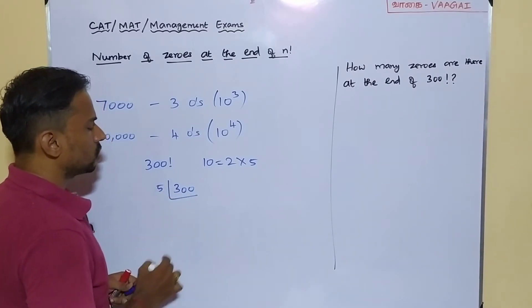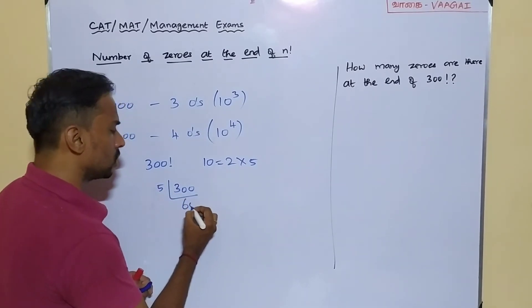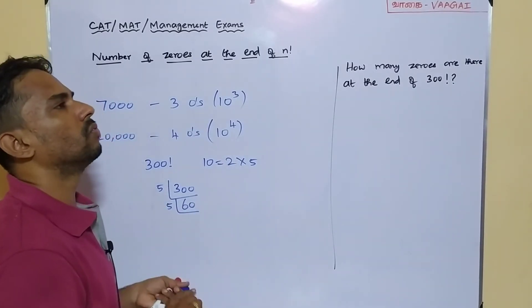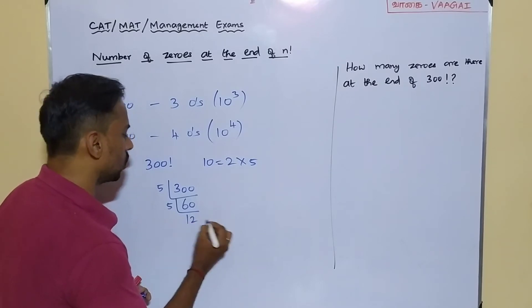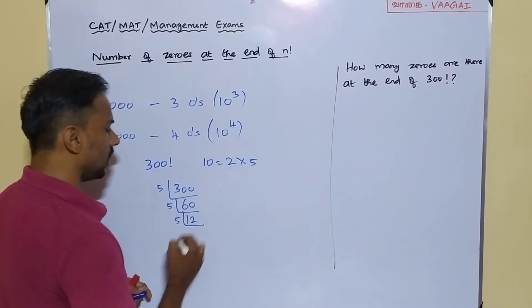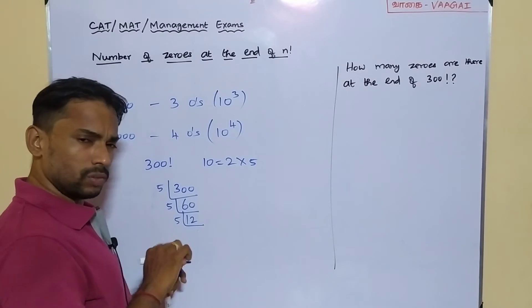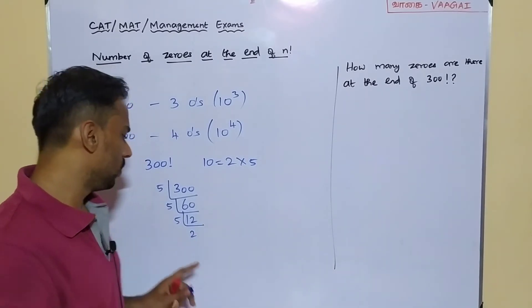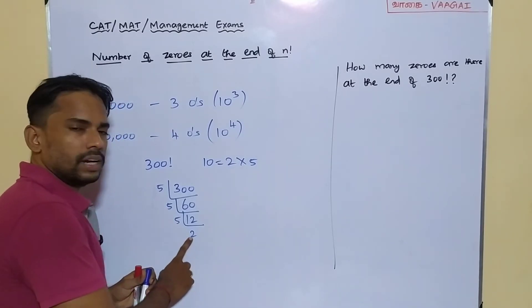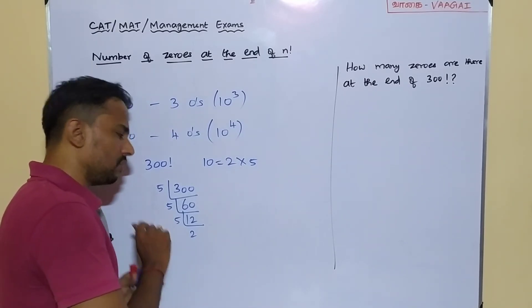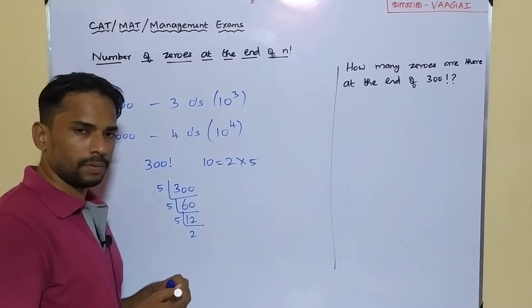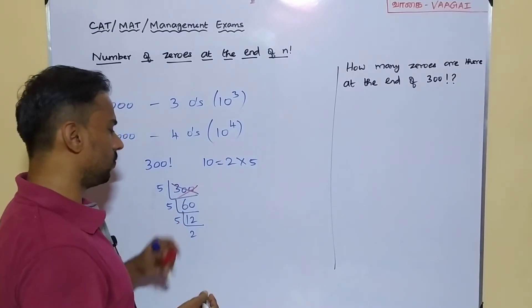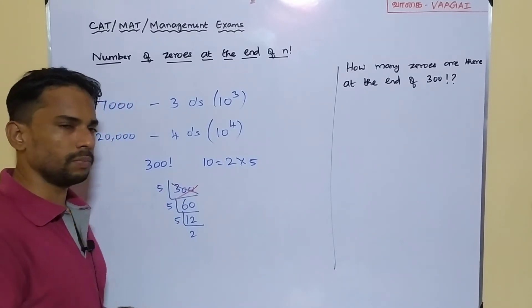Shall we do that? 5 into 300 is exactly 60 times. Once again 5 into 60, we have got exactly 12. 5 into 12 times, and once again we can go for 5 into 12, so 2 times. That is it. Further we cannot proceed, so we can stop here itself, because we are ending up with the number 2. 2 is less than 5, so we can stop there itself. As usual, we can strike out or eliminate our first number from where we started, and we can just add the other remaining numbers.